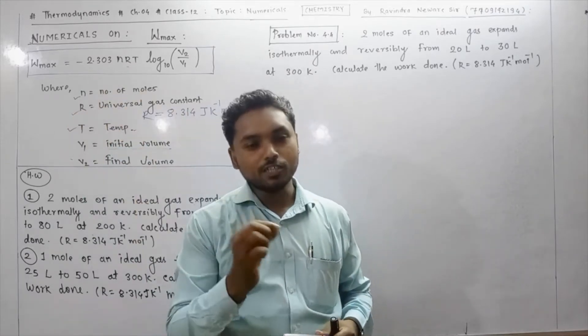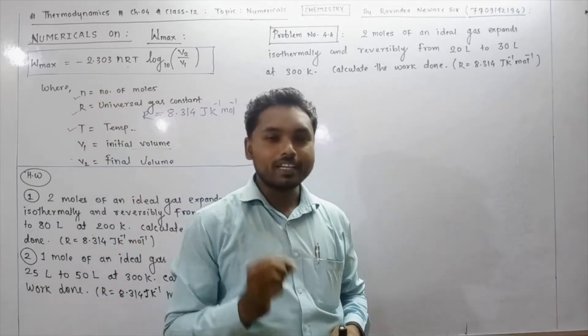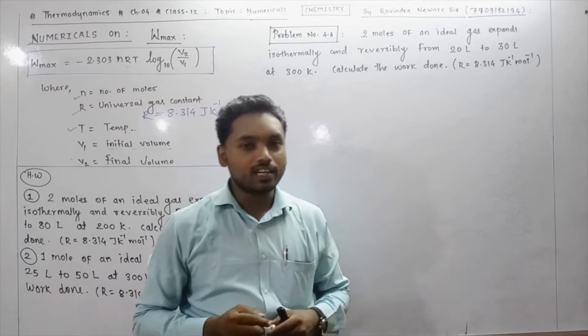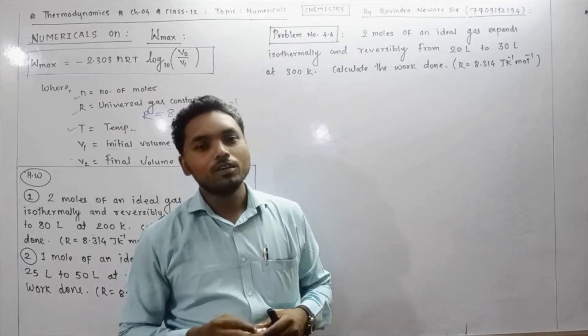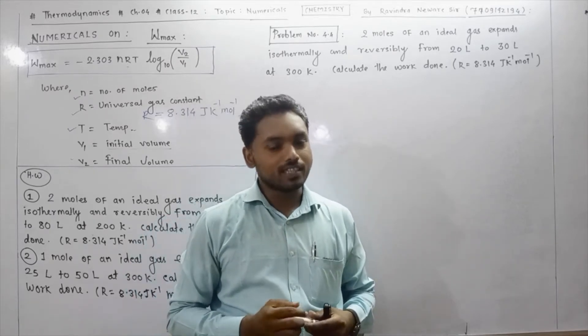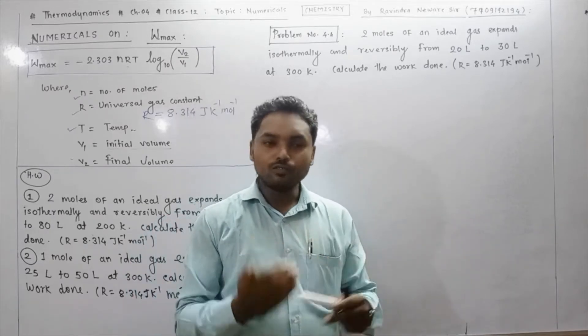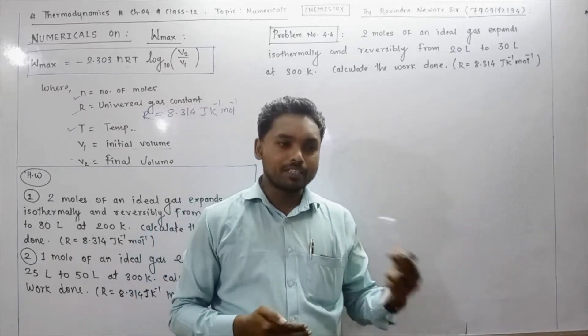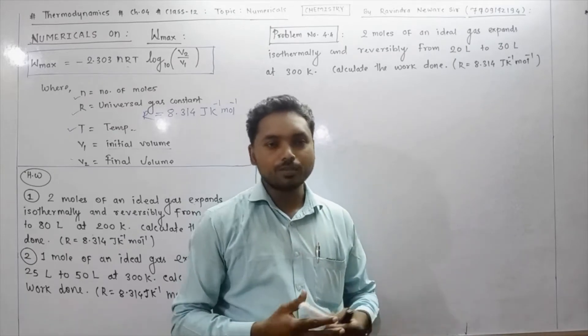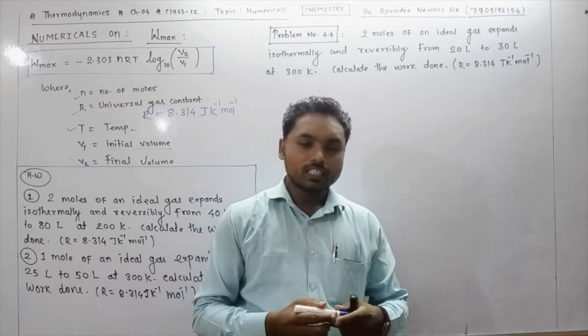Wmax is equal to minus 2.303 nRT log of V2 upon V1 to the base 10. The other formula is in pressure terms, which we will cover in the next video.